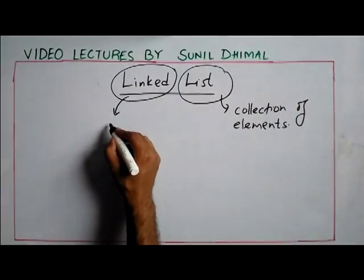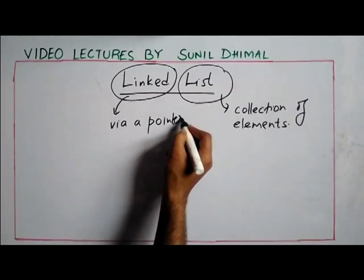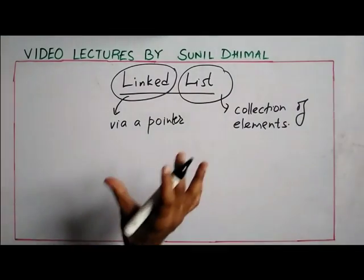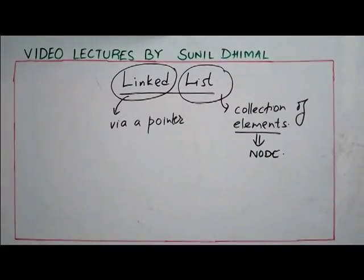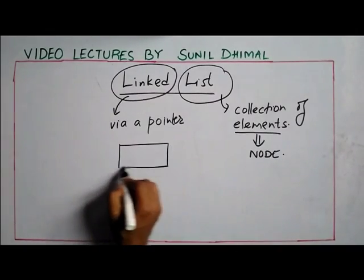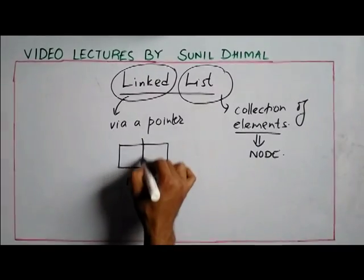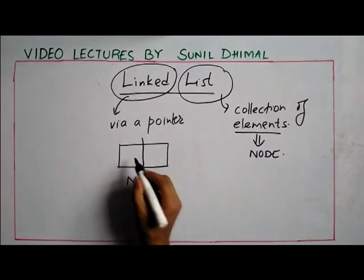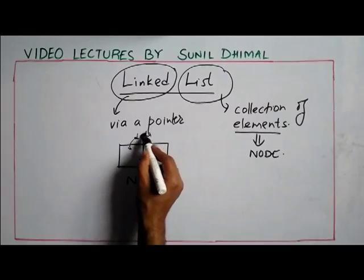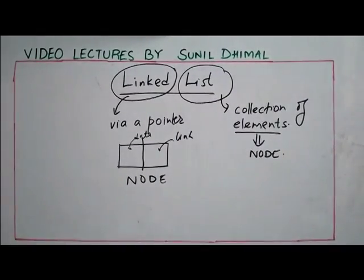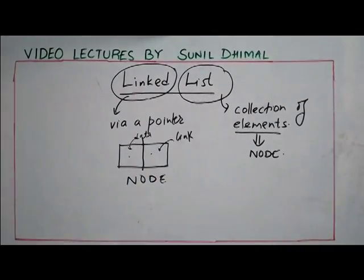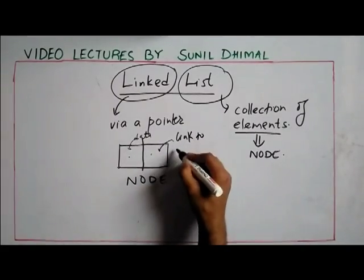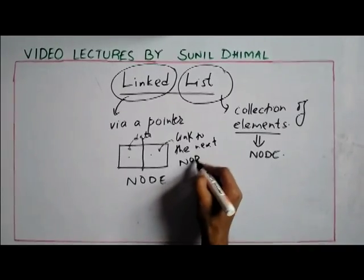In a linked list, each and every element is called a node. Each node in a linked list has two components: the first component is called the data, and the second one is called the link — specifically, the link to the next element or next node.